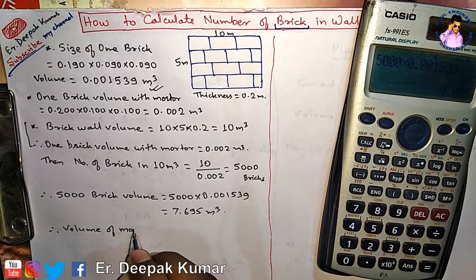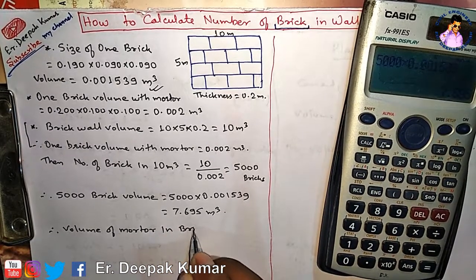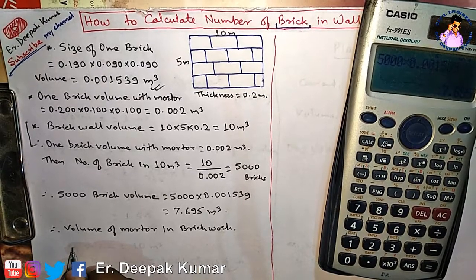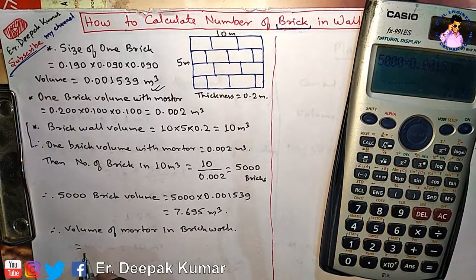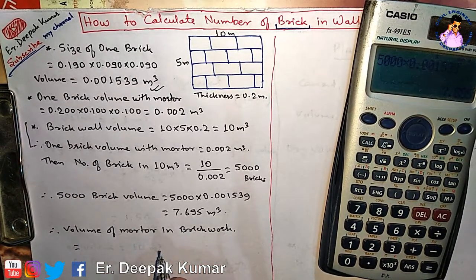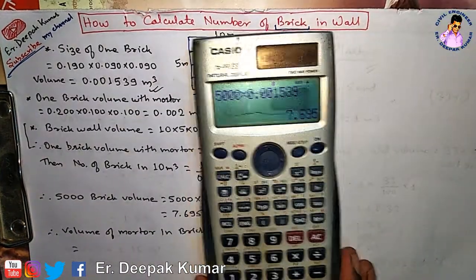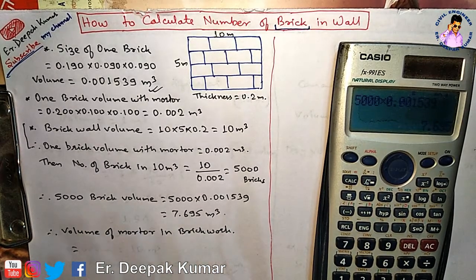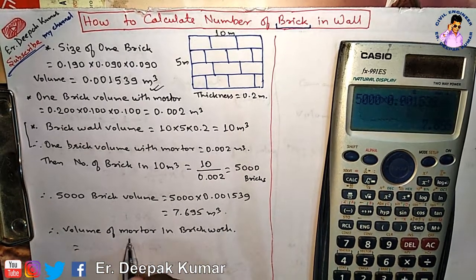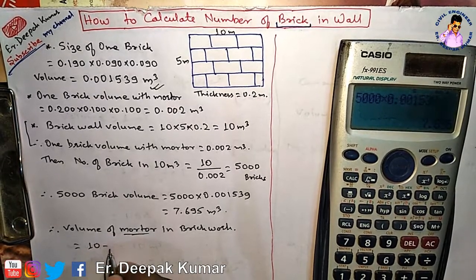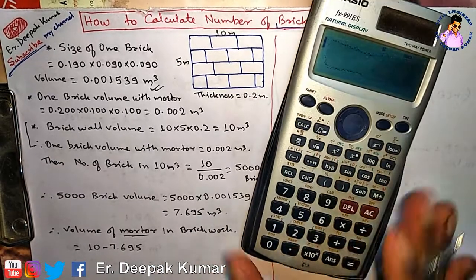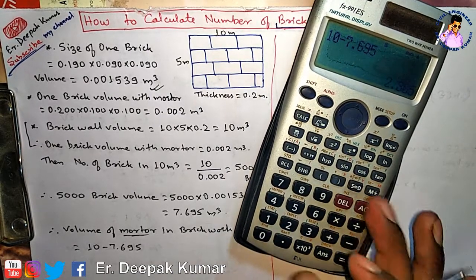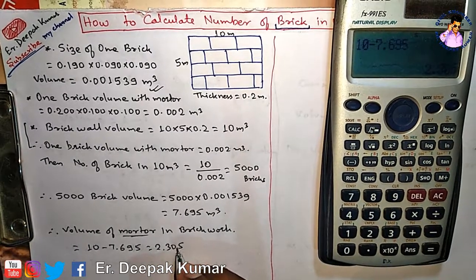Now we find the volume of mortar in the brick work. Volume of mortar equals total wall volume minus brick volume: 10 minus 7.695 equals 2.305 cubic meter. This is the volume of mortar.